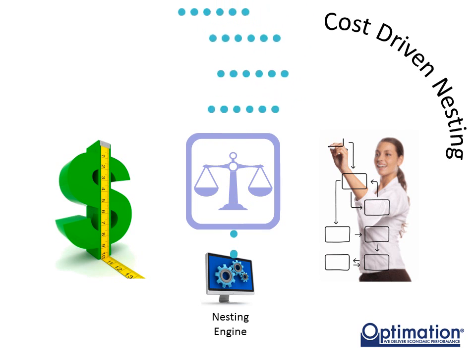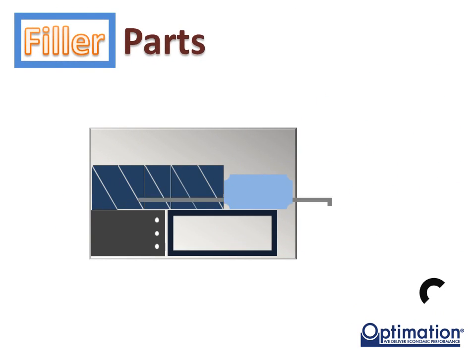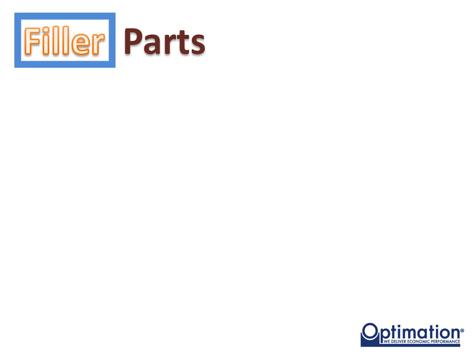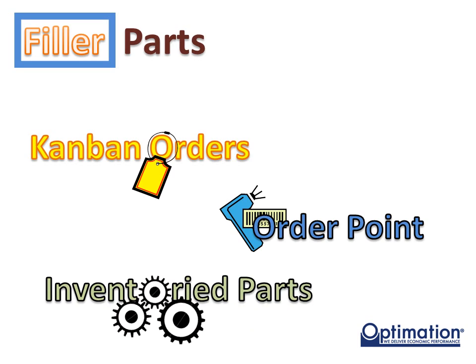Another advancement in cost-driven nesting that keeps part quantities up is filler parts. These are a special class of parts that are placed on the nest only after all regularly ordered parts that fit the area have been exhausted. Fillers do just what their name says — they fill the spaces left over in the nest. Since they are placed on the sheet only when no regularly scheduled part will fit in the location, these parts are always made out of what would otherwise be scrap. Fillers could be Kanban orders or order point orders for inventoried parts, or parts intentionally converted to inventoried parts because they are so effective at filling nests. Regardless of the reason, filler parts can make a big difference in material efficiency.